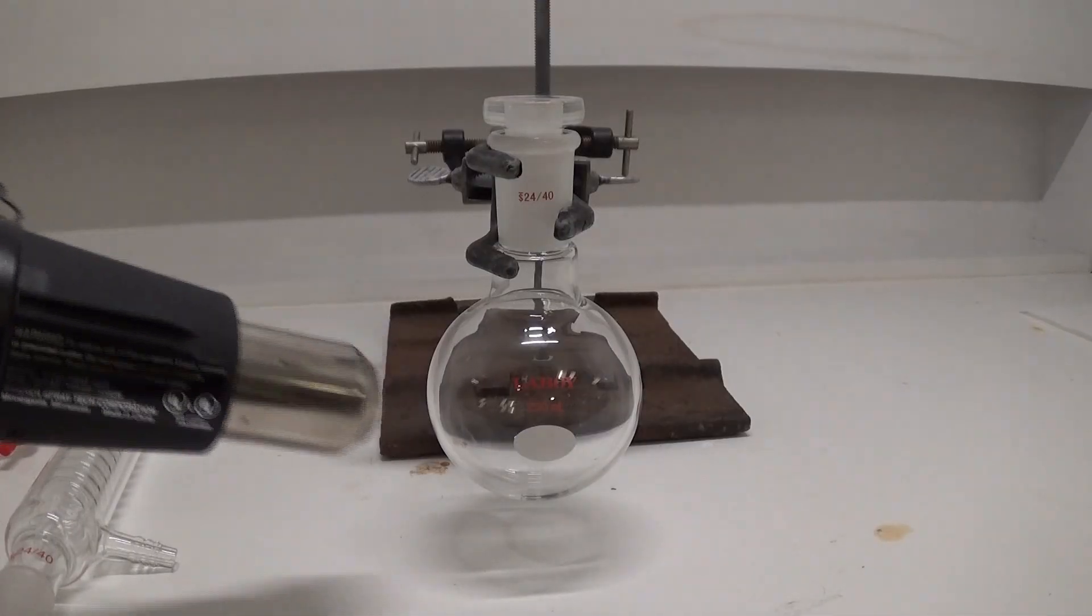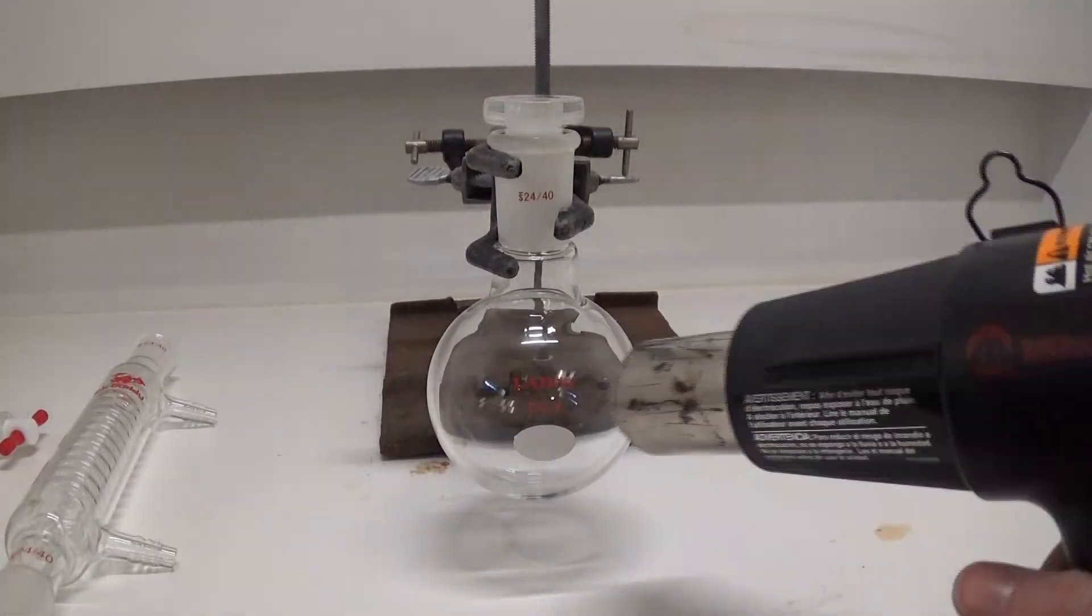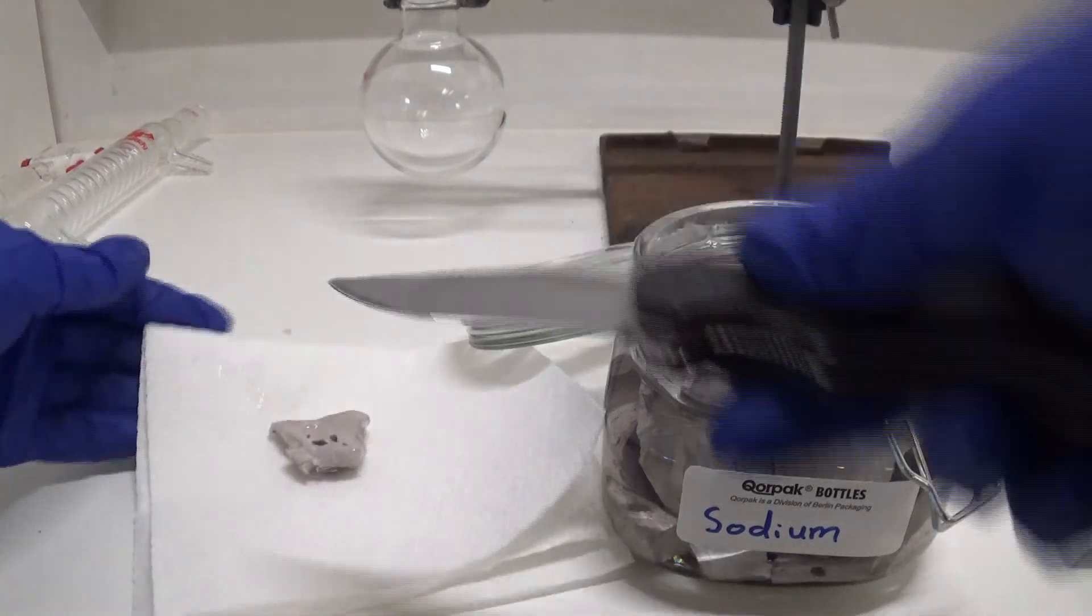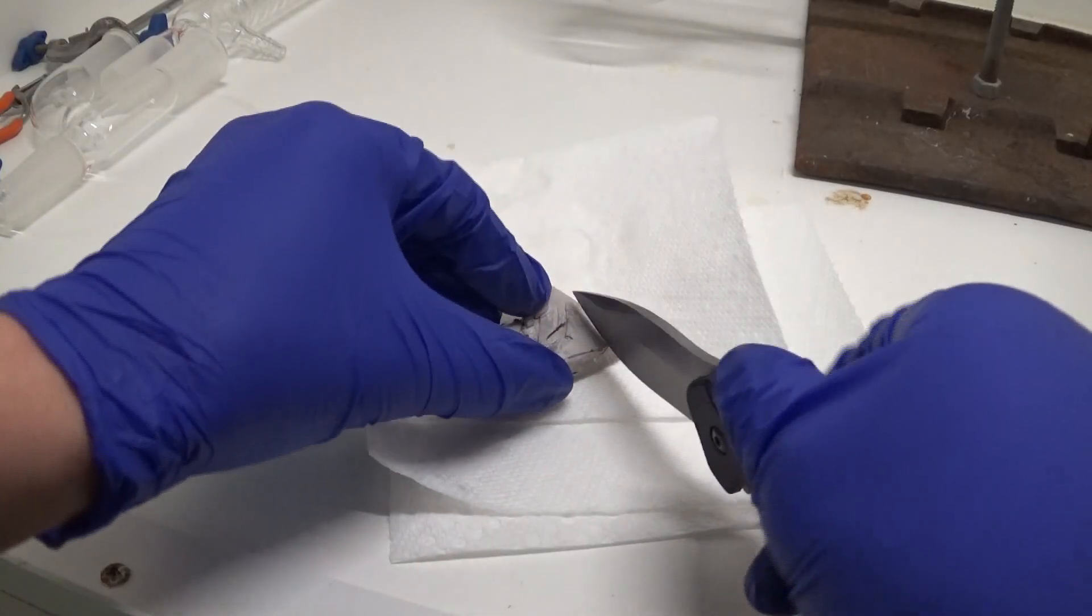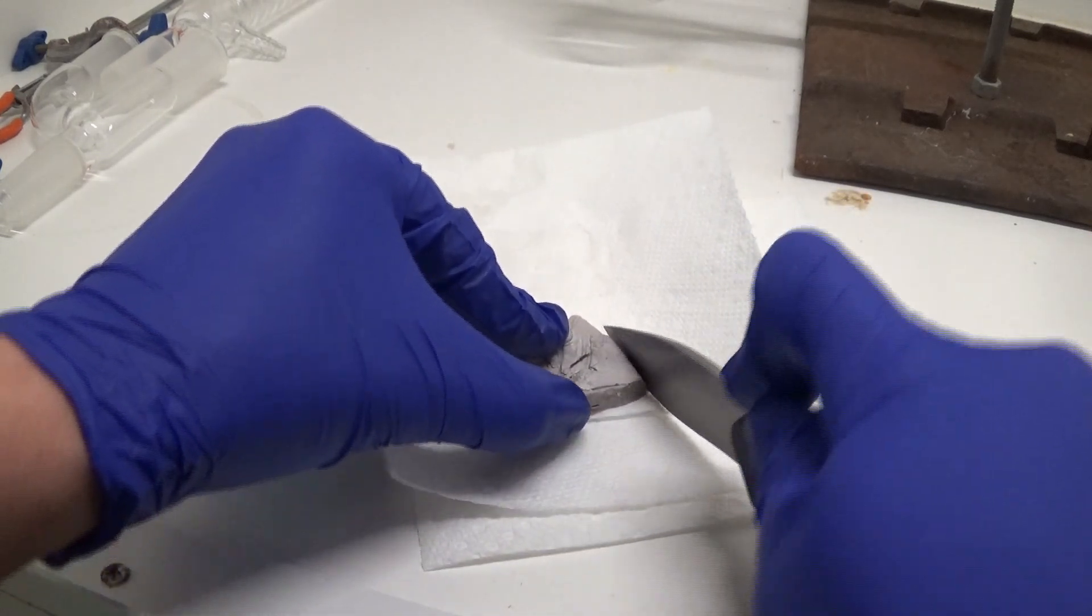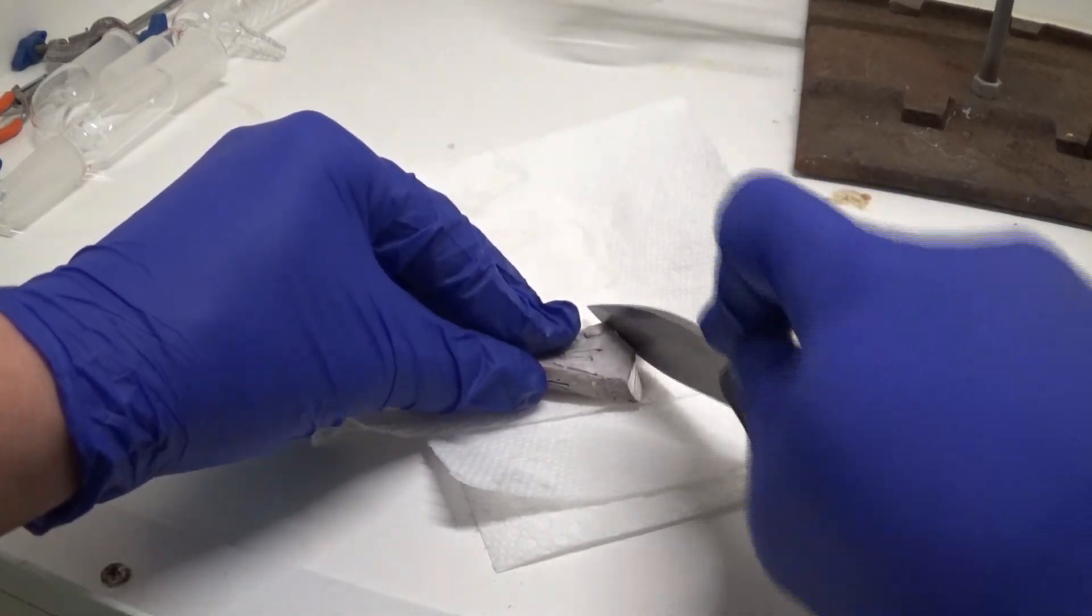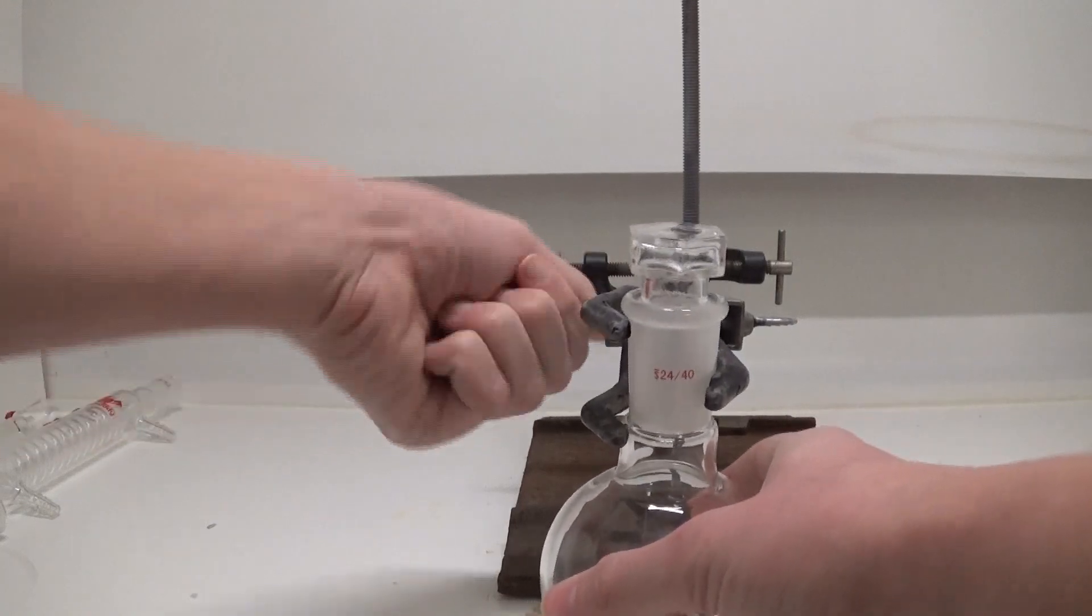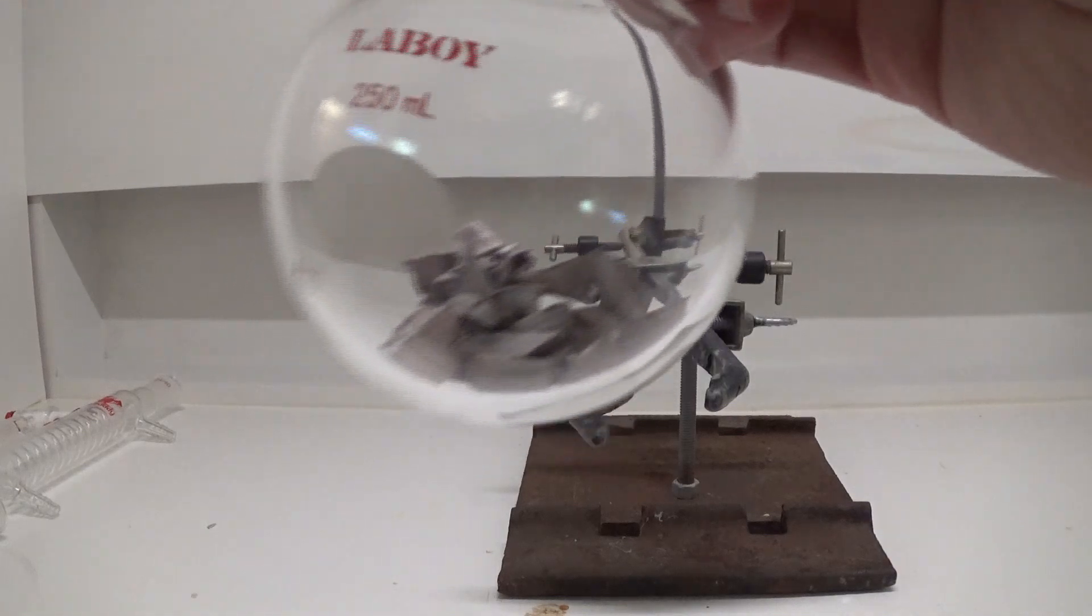I started out by drying my glassware. We're going to be using sodium and don't want any water to get into the system. Now sodium is fun to cut up, but it's also kind of difficult and tedious. It's a soft metal, but it's still a metal, and it takes a while. Here is all the sodium I cut up and transferred into this flask.